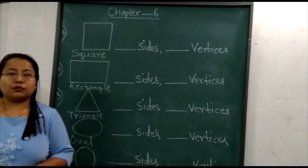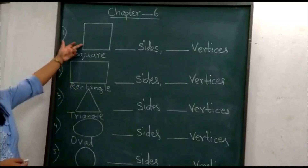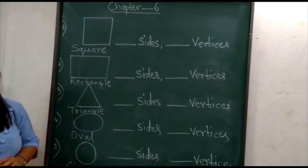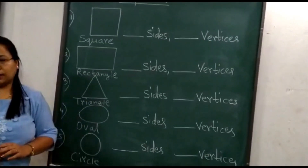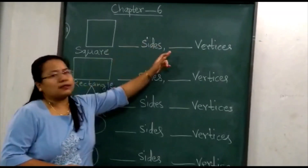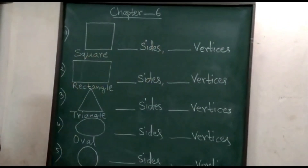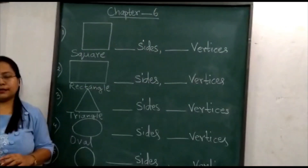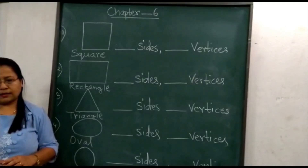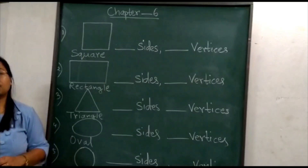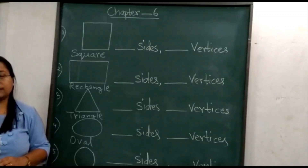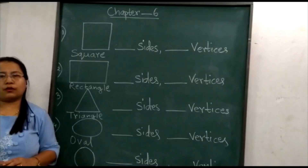Now let's begin with the 2-dimensional shapes: square, rectangle, triangle, oval and circle. We will find out and write down the number of sides and vertices for each figure. Let us understand what sides and vertices are. Sides are straight lines that make a shape. Vertices are the points where two or more lines meet.